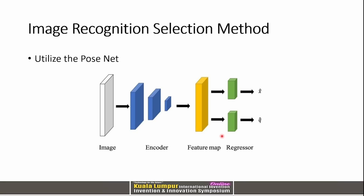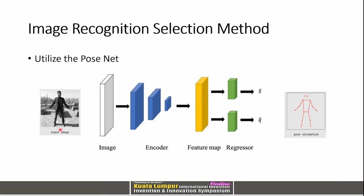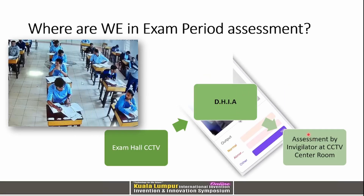For the technical approach, we utilize PoseNet — a conventional and publicly available framework. When an input image is sent to PoseNet, it performs pose estimation by detecting key points representing the movement of each subject — the student. Our system acts as a middleman between the exam hall situation and the invigilator, providing an AI-based application to detect whether a student is looking at another student during the exam.